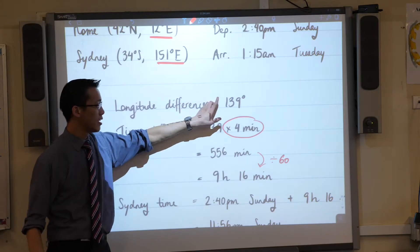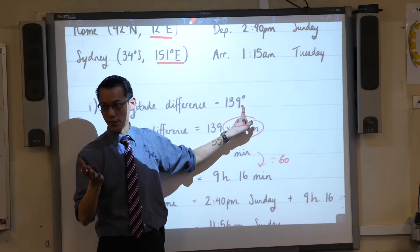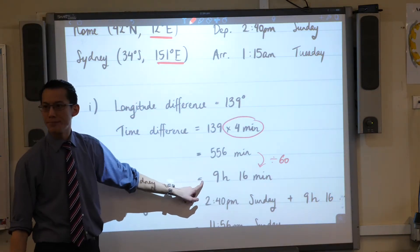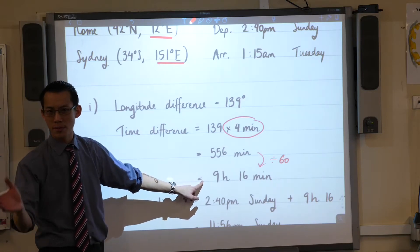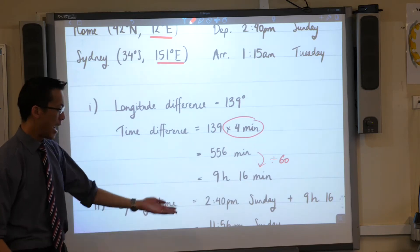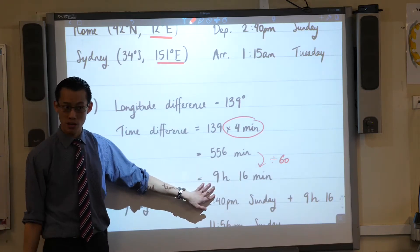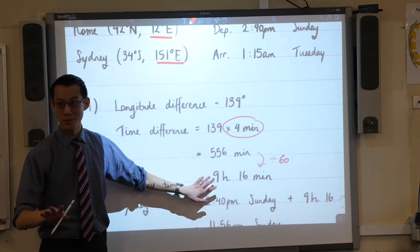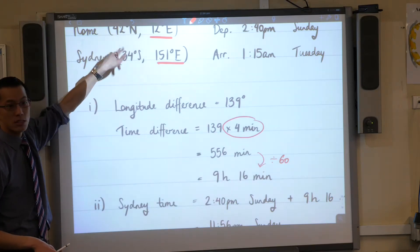And if you want, you can get your calculator. Do 139 divided by 15 and you'll get 9.2 something, and that's the number of hours. Remember, you can hit that degrees, minutes, seconds button and it will convert to this, no approximation required. So we've got a time difference between the two cities.